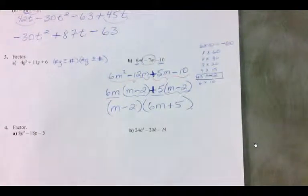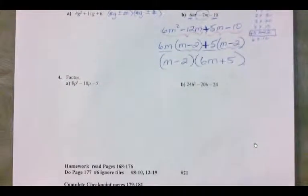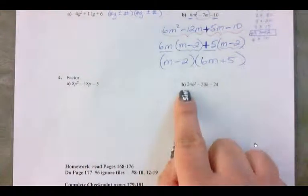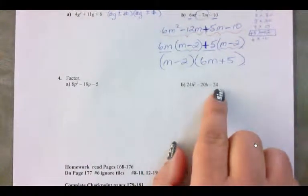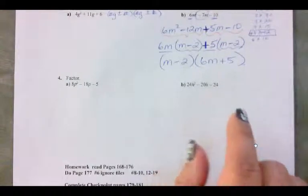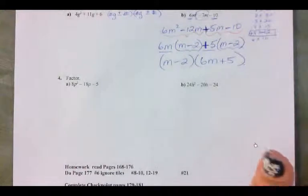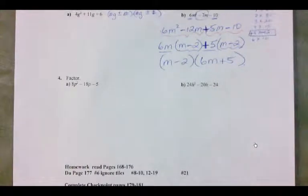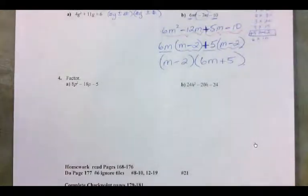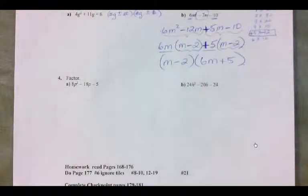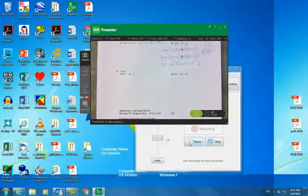Here's a heads-up about the next question. You'll notice it has 24, 20, and 24 — there's a common factor among all three of those terms. You have to factor out that common factor first and then do decomposition. It goes a lot easier if you do that. So let's pause and then we'll come back.